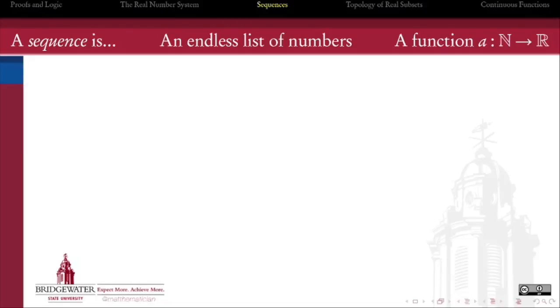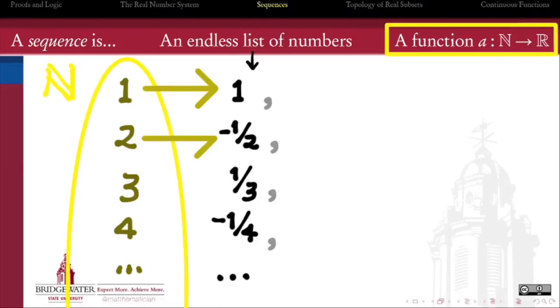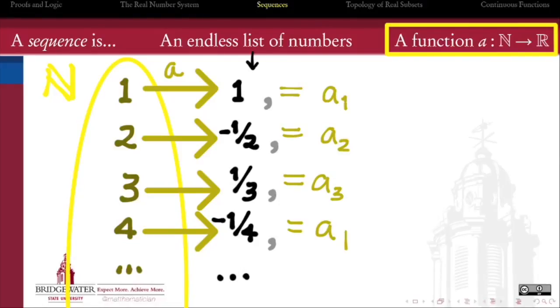Informally, we think of a sequence as an endless ordered list of numbers. But formally, we can think of it as a function from the natural numbers into our number system of choice, which for us right now is the rationals. This function assigns to each natural number n the nth term of the sequence. And because the natural numbers are endless by Archimedes, every sequence must be endless as well.